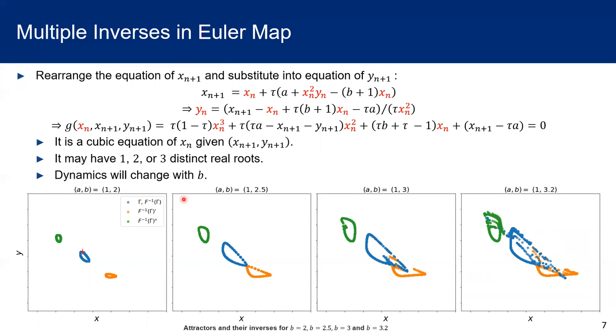Now, we are going to take a look at the backward time dynamics of this Euler map. First, we rearrange the equation of xn plus 1 and substitute this into equation of yn plus 1. If the values of xn plus 1 and yn plus 1 are given, we could get a cubic equation of xn. And this equation will probably have one, two, or three distinct real roots.